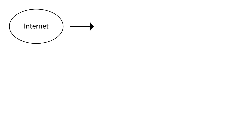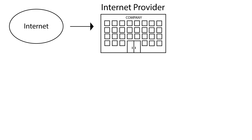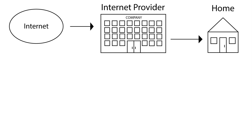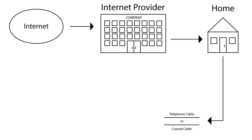Let me explain the process. Information from the internet travels to your internet provider before being directed to your home through either a telephone cable or coaxial cable. The telephone cable or coaxial cable must be plugged into your modem, where information can be translated into data your computer understands.